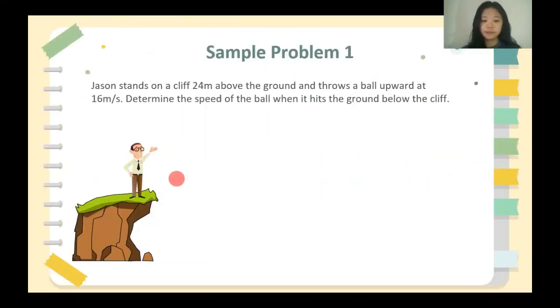Jason stands on a cliff 24 meters above the ground and throws a ball upward at 16 meters per second. Determine the speed of the ball when it hits the ground below the cliff.